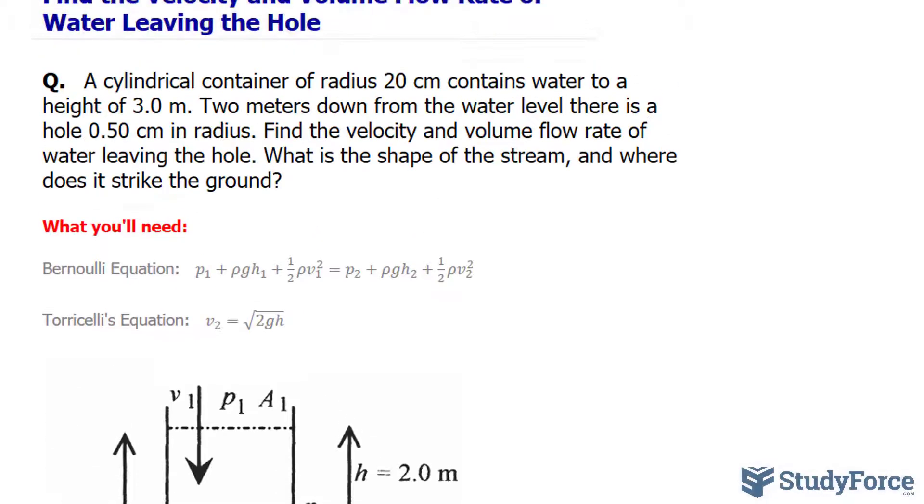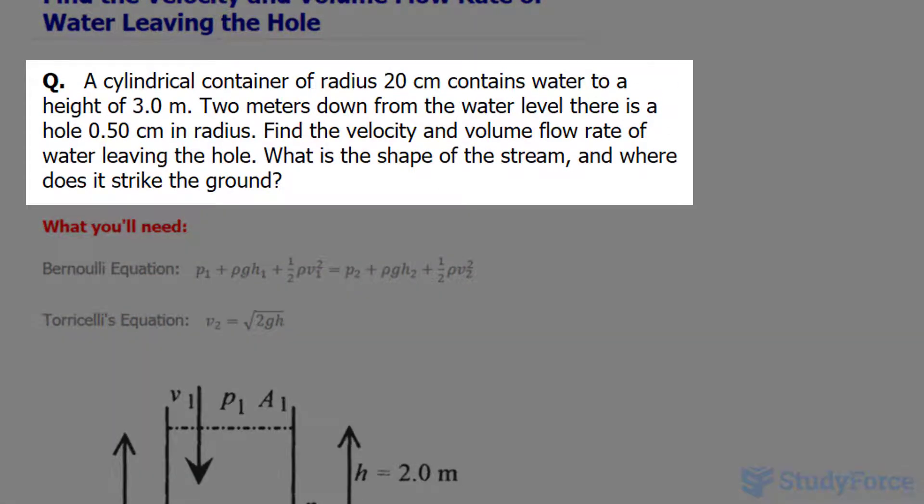The question reads: a cylindrical container of radius 20 centimeters contains water to a height of 3.0 meters. Two meters down from the water level, there is a hole 0.50 centimeters in radius. Find the velocity and volume flow rate of water leaving the hole. What is the shape of the stream and where does it strike the ground?